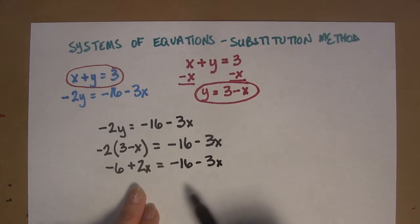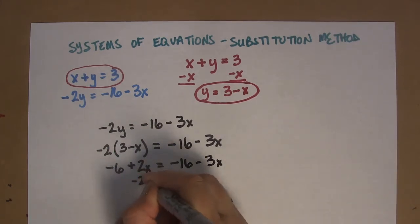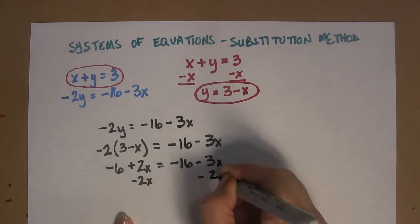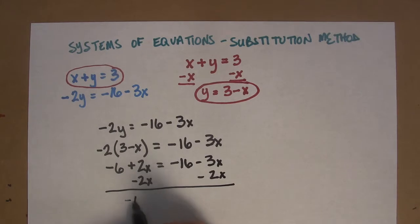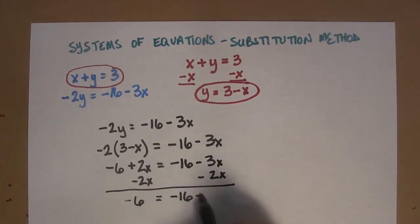Now I want to get my x's on the same side of the equation. The easiest way for me to do that is probably going to be to subtract 2x from either side. That's going to give me negative 6 over here equals negative 16 minus 5x.